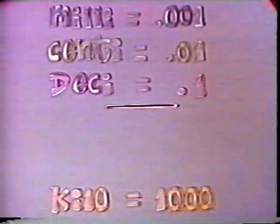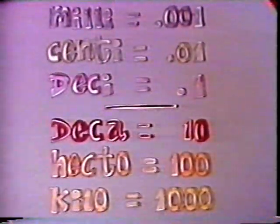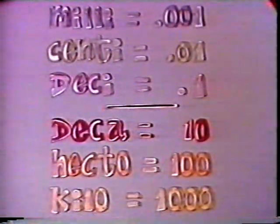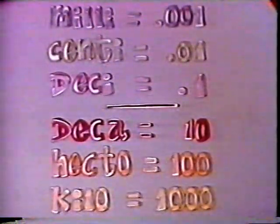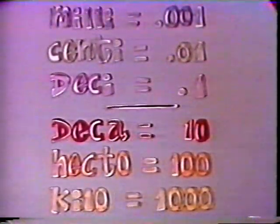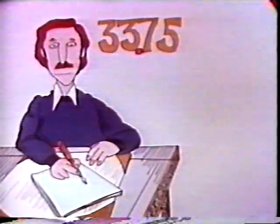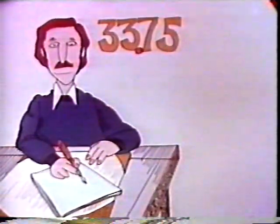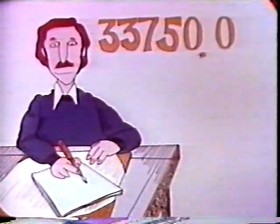In addition to milli, centi, deci, and kilo, there is deca, which means 10, and hecto, which means 100. By knowing these prefixes, you are halfway toward knowing the metric system. Now many calculations are merely a matter of moving the decimal point, not the pencil.